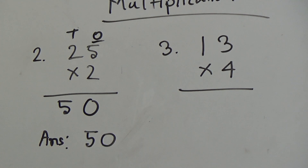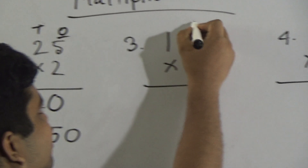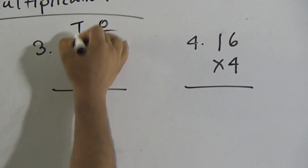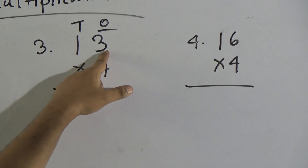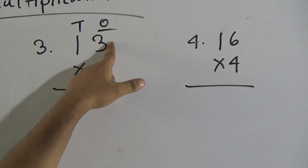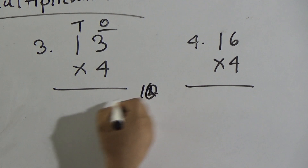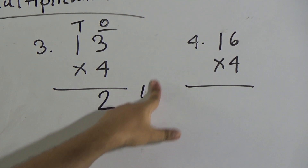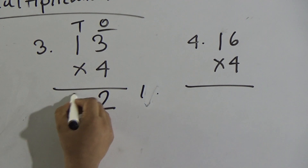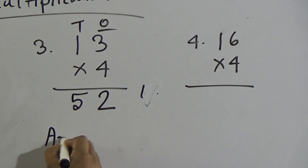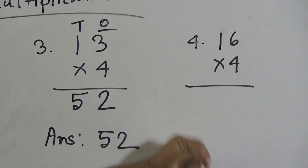Next question: 13 multiplied by 4. Here 3 is in the ones place and 1 is in the tens place. Counting times table 4: 4 ones are 4, 4 twos are 8, 4 threes are 12. From 12, I write 2 here and carry the 1. Now 4 ones are 4, and adding carrying 1 gives 5. So the answer is 52. We must write the answer.